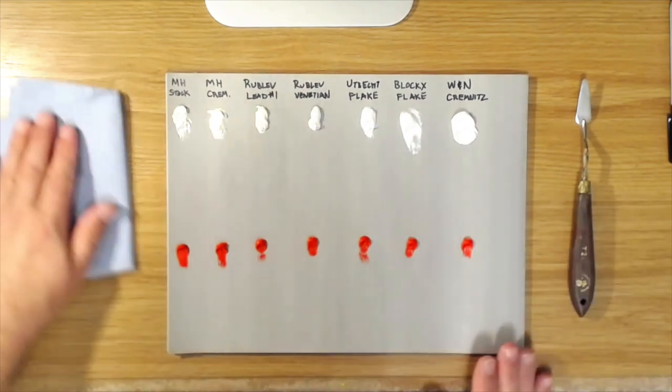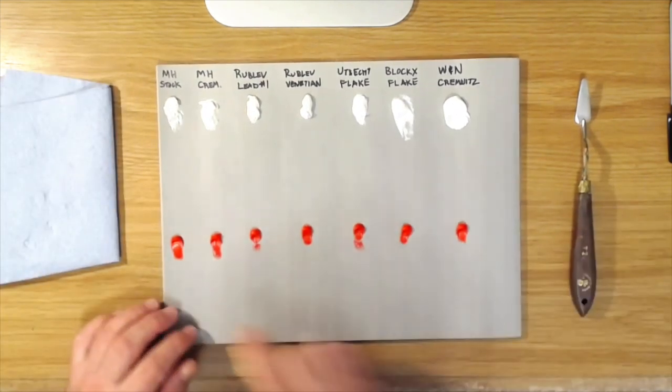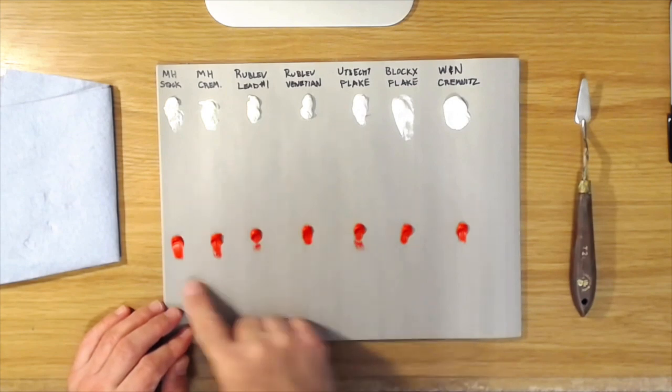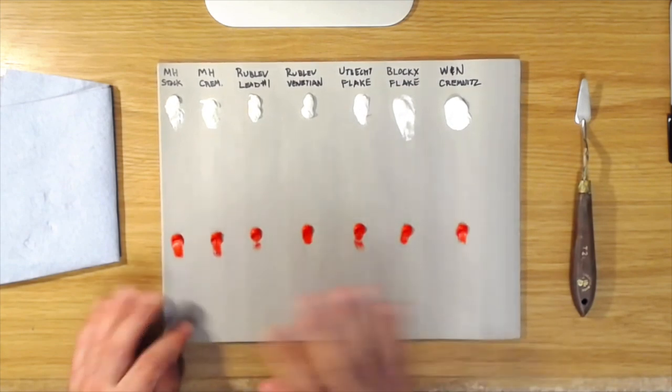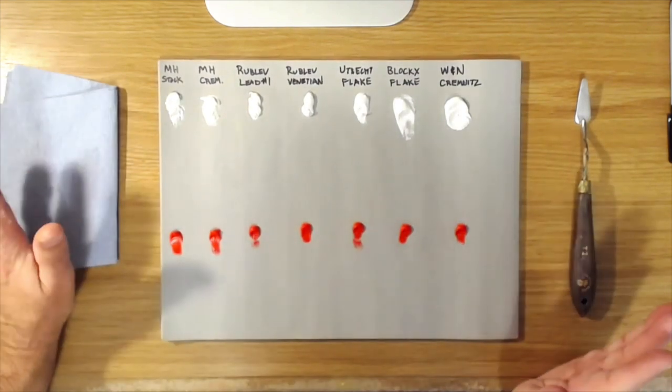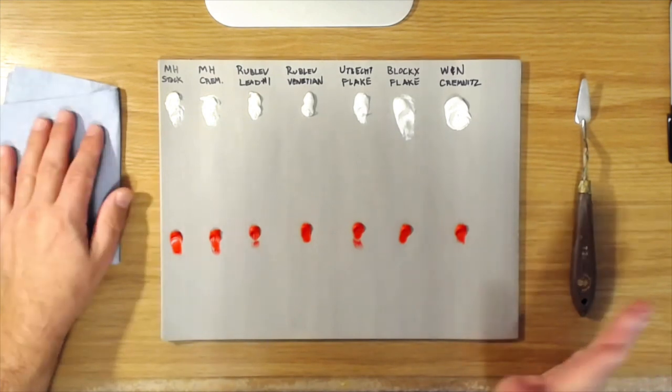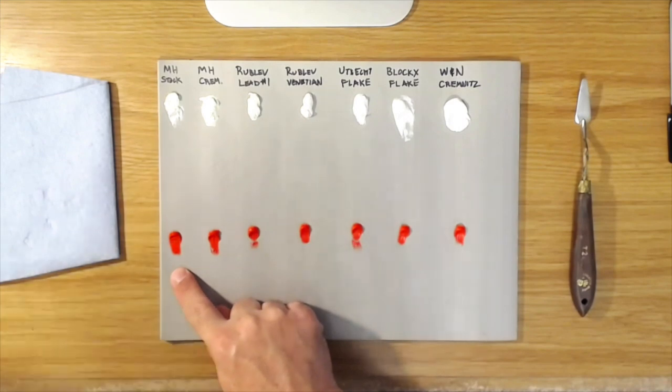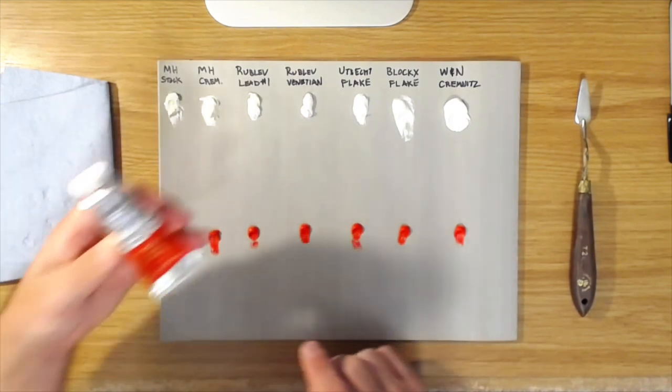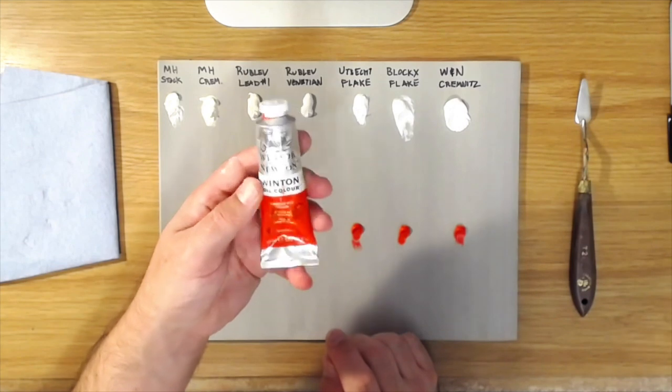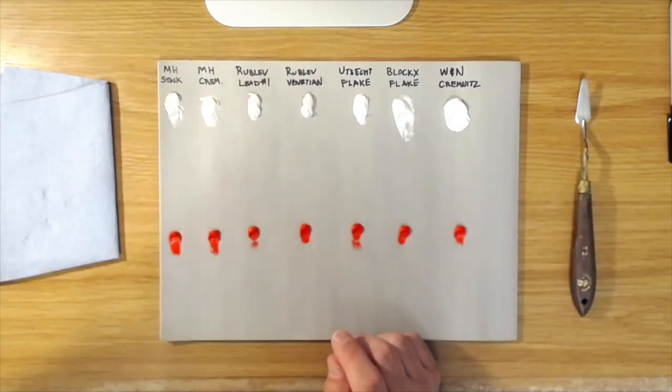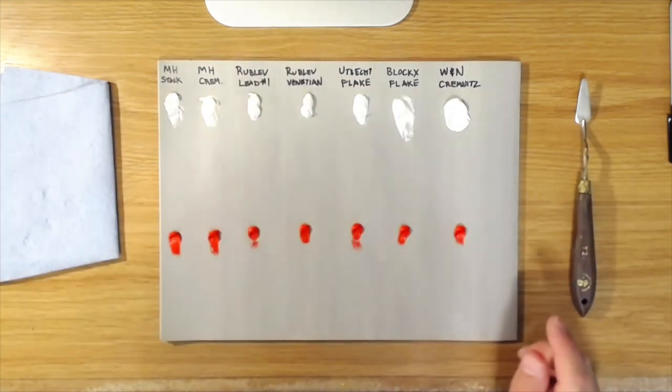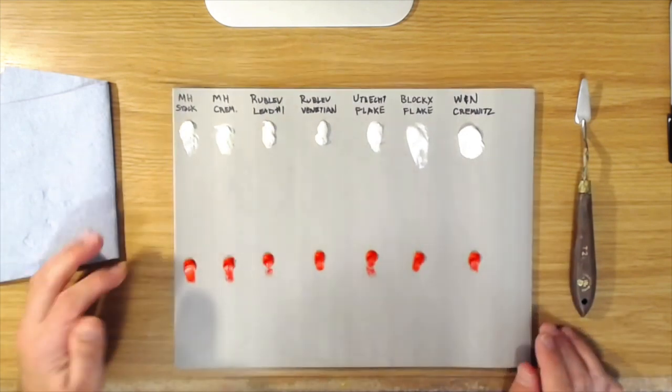What I've done out here is I've squeezed out, and I've tried to make these all the same as close as possible. Again, this is not a scientifically calibrated test, it's just for demonstration purposes. This is Windsor Newton Winton, which is their student grade line, this is cadmium red medium. I'll just mix each one so we'll take a look at the tinting strength and I'll show you some of the qualities of each one.